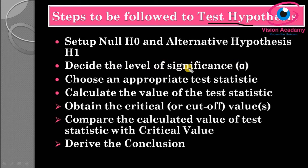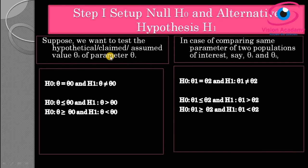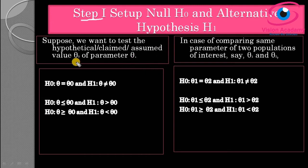Let us go into detail about setting up the null and alternative hypothesis. Before moving into hypothesis testing, the very first step is to set up null and alternative hypothesis. We will calculate statistics for single sample, two samples, and three samples. Suppose we want to test the hypothetical or assumed value of a parameter theta — we can set up null and alternative hypothesis as follows.